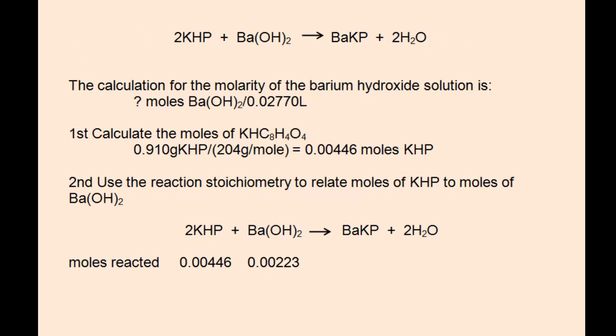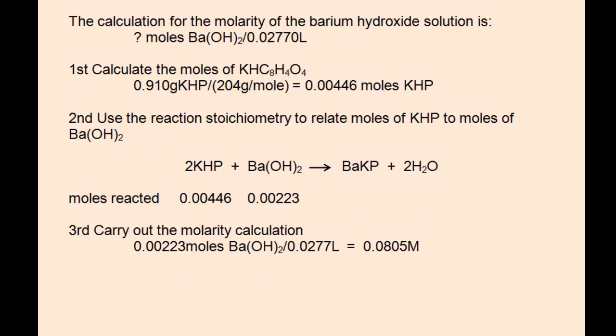So 0.190 grams of KHP divided by 204 grams per mole of KHP gives 0.00446 moles of KHP. So knowing the two-to-one ratio between KHP and barium hydroxide, realize that 0.00223 moles of barium hydroxide would react if 0.00446 moles of KHP are in the solution.